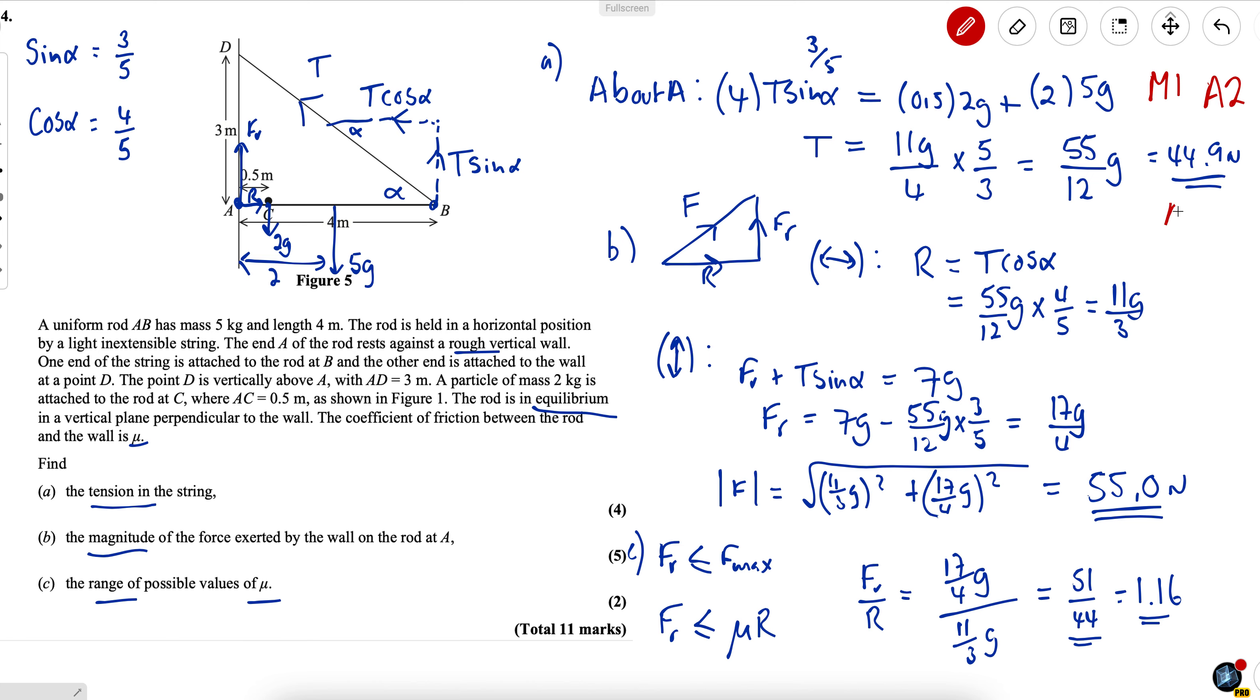And then an accuracy mark for 44.9. For part B there's a method mark here for an equation only in T or finding 11 G. Then there's another method mark for this equation here again only in T. You are allowed to mistake sine and cos but you must have all terms included and an accuracy mark for finding the value. Then there's a method mark here for using Pythagoras with your values that you found even if they're incorrect as long as you correctly use Pythagoras and then an accuracy mark for 55.0 or equivalent.